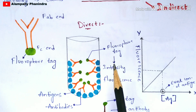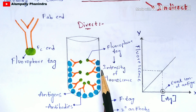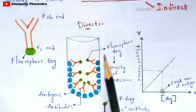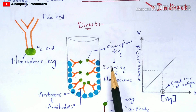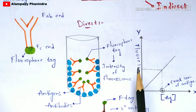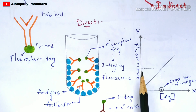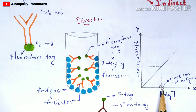You take an unknown antigen, add the antibodies which consist of the fluorophore tag in the same way, and the intensity of the fluorescence will be obtained from the spectrophotometer. That value is noted and plotted on the graph, and once you extrapolate, the exact concentration of the unknown antigen will be known.